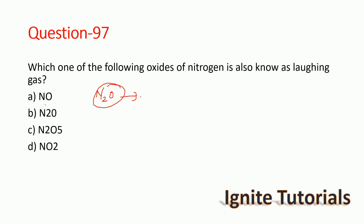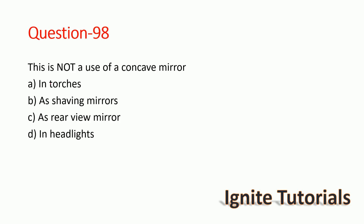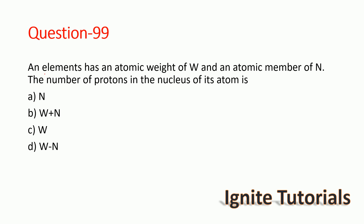Question 96: Which oxide of nitrogen is called laughing gas? Nitrous oxide is also called laughing gas — option B is correct. Question 97: Which of the following is NOT a use of a concave mirror? Rear-view mirrors use convex mirrors, not concave — so option C is the correct answer. Concave mirrors are used in torches, headlights, and shaving mirrors.